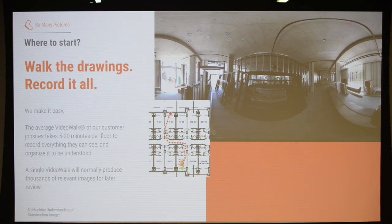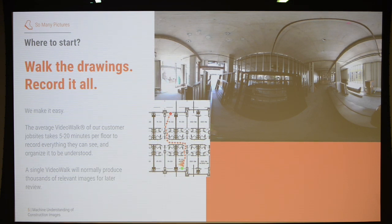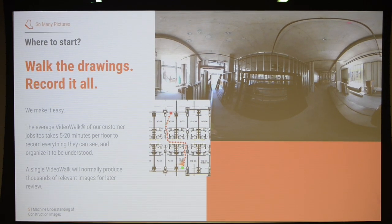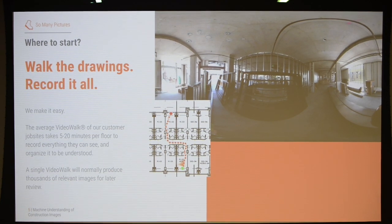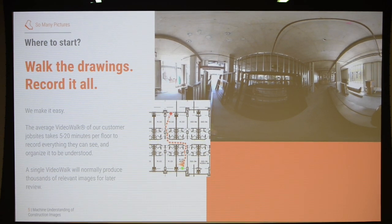One of the ways they can do that — we've created something called Video Walk. Instead of capturing still images, we let them capture video. They walk around, capture the video, tell us where they were on the floor plan when they started and when they ended, and then we map each frame of that video into a pinpointed location corresponding to the place in the floor plan. We do that automatically, completely transparently to them, as a service — something that just magically happens on the data they provide.